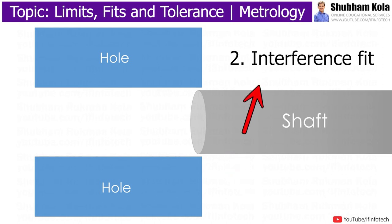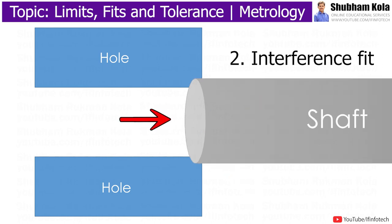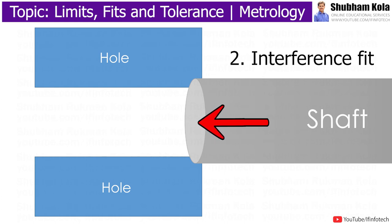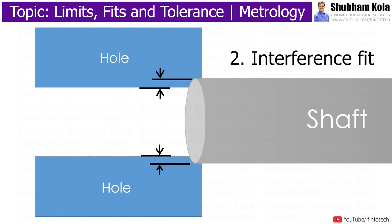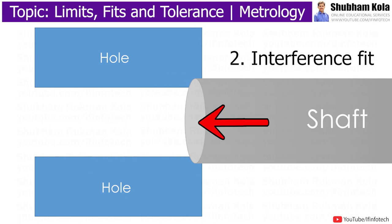In interference fit, the size of the shaft is bigger than the size of the hole. To join two parts together, a great amount of force is used. The negative difference between the diameter of the hole and the diameter of the shaft is called interference fit. It is used for components where motion and power have to be transmitted.